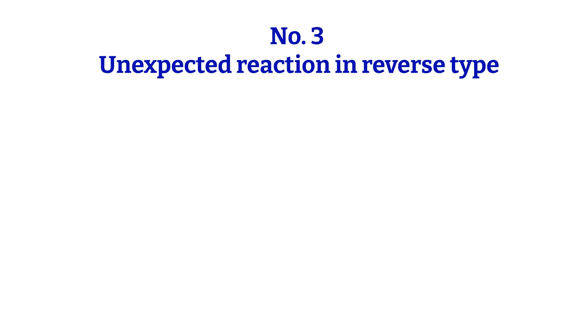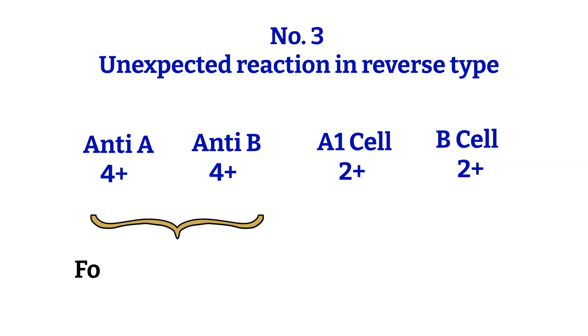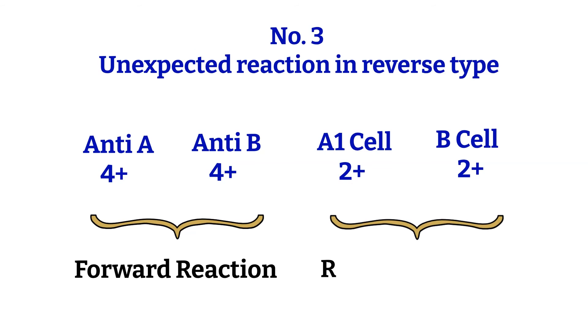Number 3: another example of unexpected reactions in the reverse blood type. Anti-A 4+, Anti-B 4+, A1 cells 2+, B cells 2+. What could cause this reactivity?